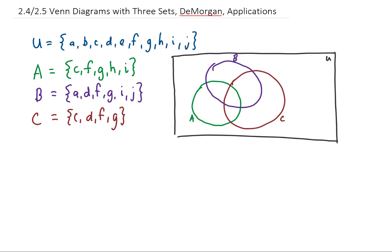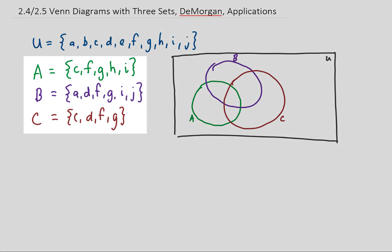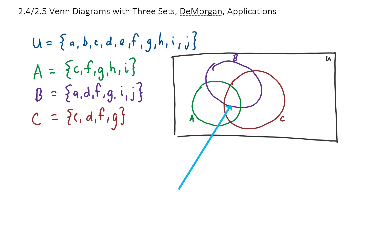When we start filling in this Venn diagram, we want to start right in this middle section, where all three sets A, B, and C overlap. So we want to start by looking for elements that are in all three sets. Looking through our sets, we see that both F and G are in all three sets, so I'm going to put F and G right in here.